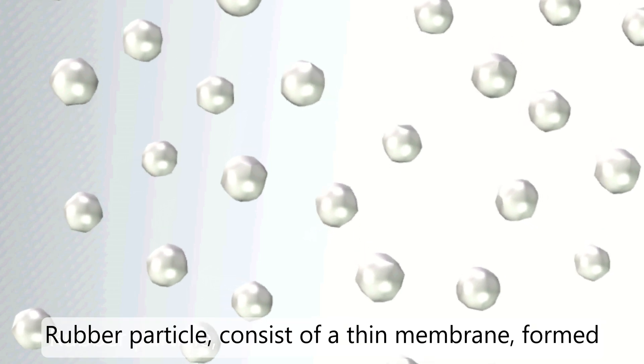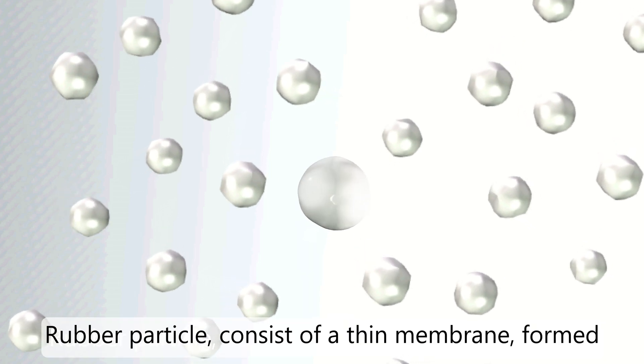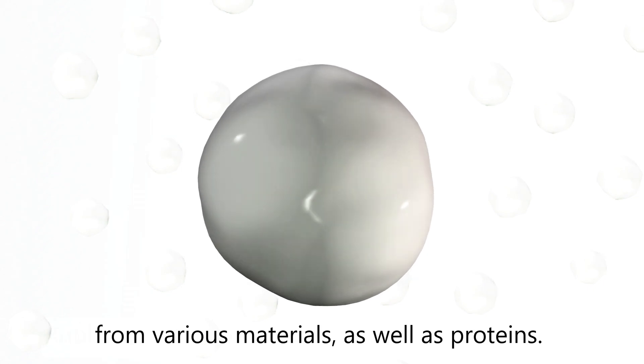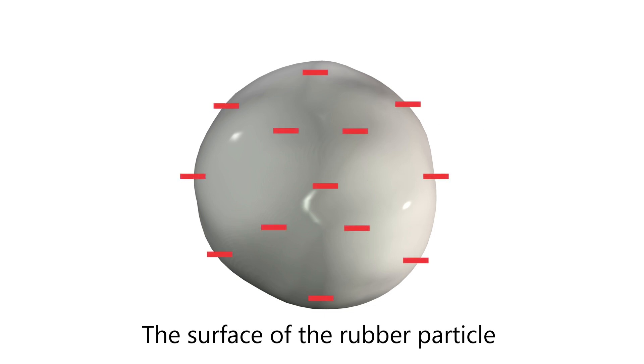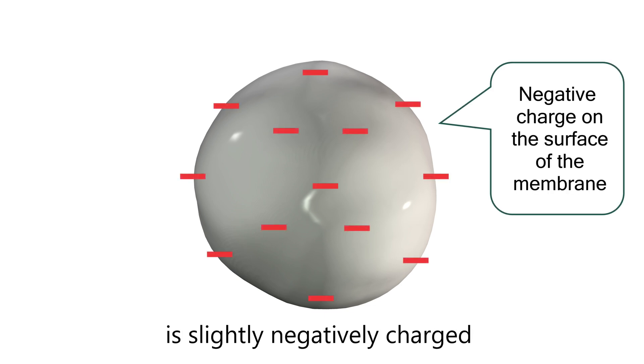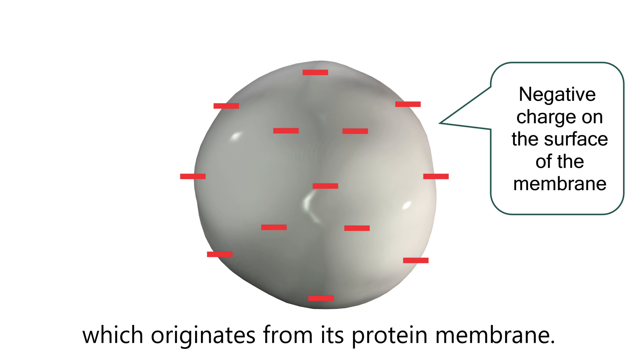Rubber particles consist of a thin membrane formed from various materials as well as proteins. The surface of the rubber particle is slightly negatively charged, which originates from its protein membrane.